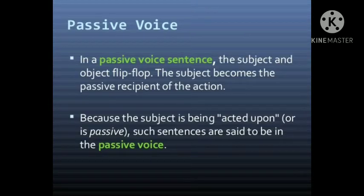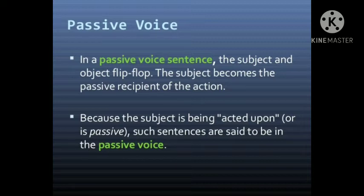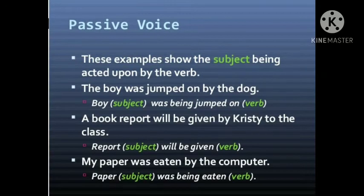Next is passive voice. In a passive voice sentence, the subject and object flip-flop. The subject becomes the passive recipient of the action — that is, the object comes to the subject's place and the subject moves to the object's place. In other words, the verb of a sentence receives the action; it does not perform the action. Those sentences are your passive voice. Because the subject is being acted upon or is passive, such sentences are said to be in the passive voice. So in active voice, the verb's subject performs the action, whereas in passive voice, the verb's subject receives the action.